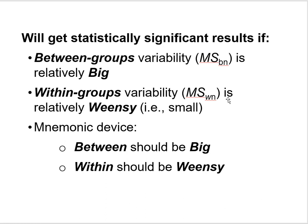You'll get statistically significant results if the between groups variability is relatively big and the within groups variability is relatively small. Here's a mnemonic device: the between groups variance should be Big — B is the first letter in both 'between' and 'big.' The within groups variance should be Weency — W is the first letter in both 'within' and 'weency.' That memory device should help you remember the ideal outcomes that make statistically significant results more likely.